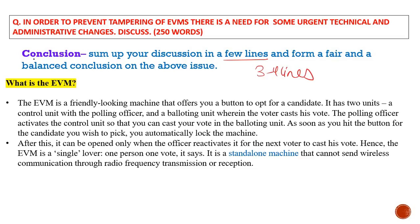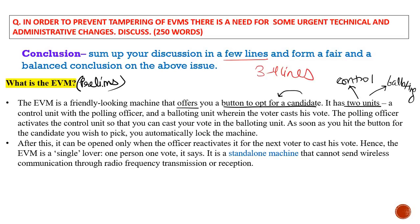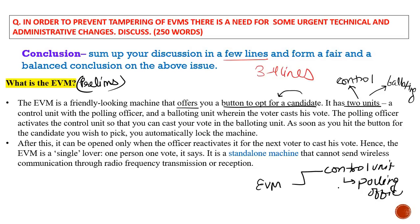You should know what EVM is: it's a machine that offers a button to vote for a candidate. EVM has two units — important for prelims. First is the control unit, which is with the polling officer. Second is the balloting unit, where the voter casts their vote. The polling officer activates the control unit so you can cast your vote in the balloting unit.